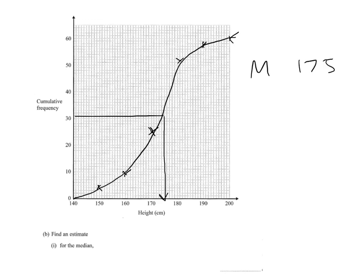Now for the interquartile range, we need the lower quartile, which will be the reading from 15 because that's a quarter of 60. And that reads down at around about 165. So the lower quartile is 165.